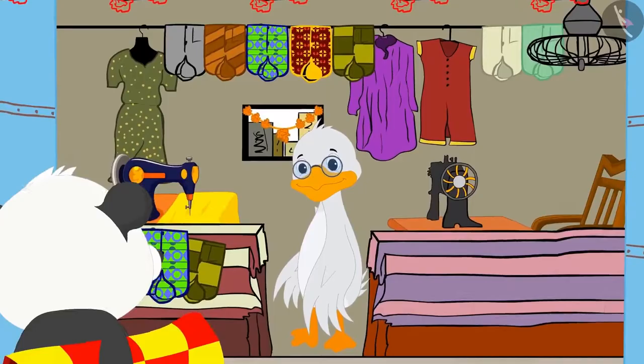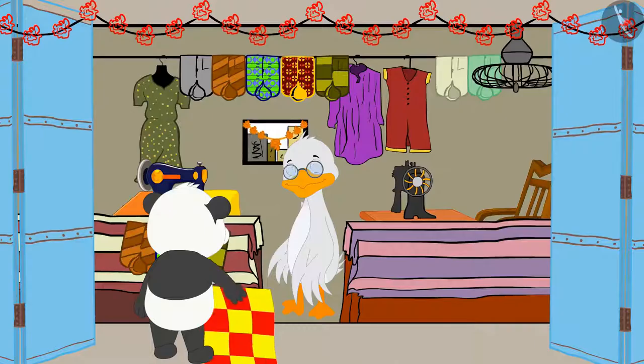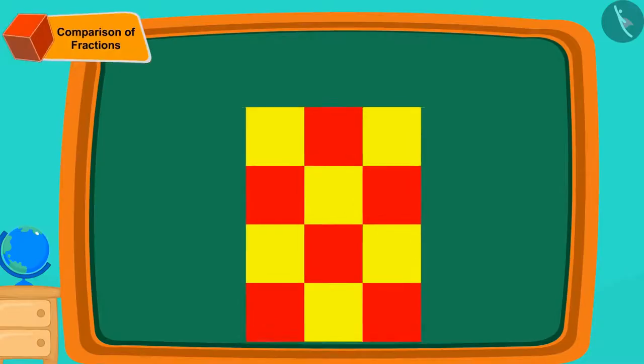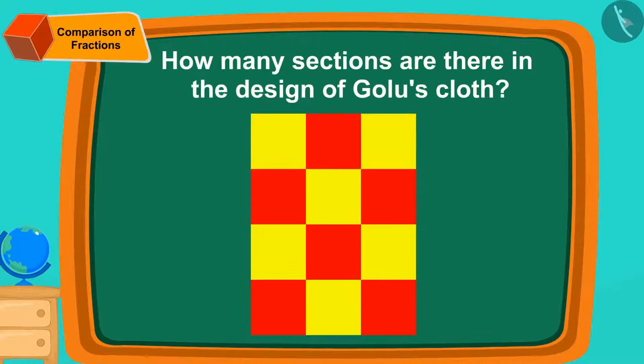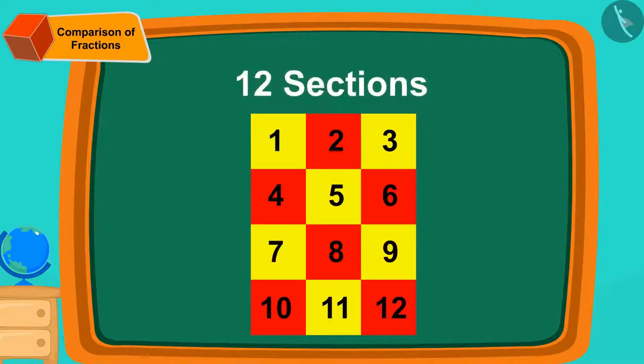Golu has got a cloth of this design to Cha Cha's shop today. He wants to get a trouser stitched for himself. Children, can you tell how many sections are there in the design of Golu's cloth? Yes, 12 sections.